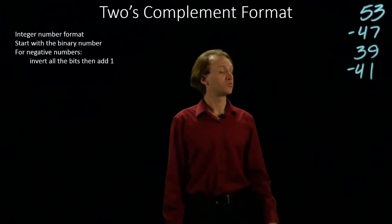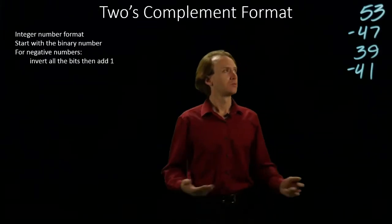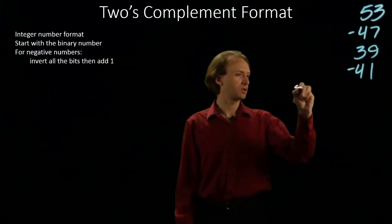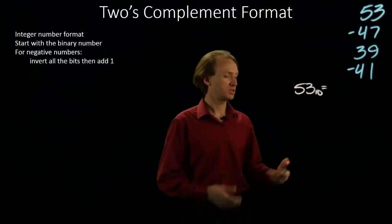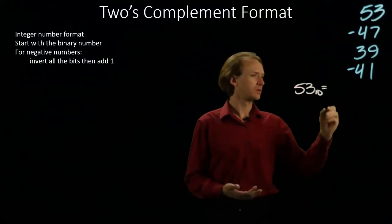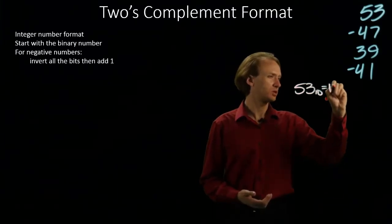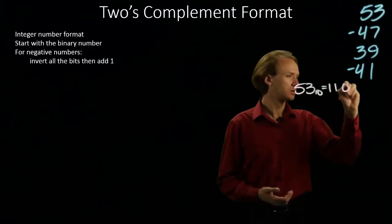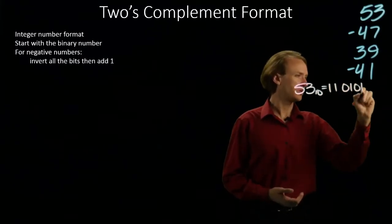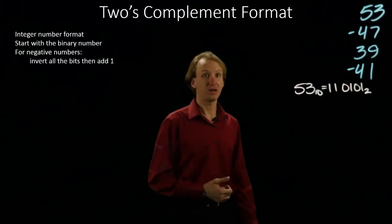This time I'm going to convert these four numbers into the two's complement format. My first number is 53, so I will begin by converting this number into binary. I have 32 plus 16 gives me 48, plus 5 gives me 53. So there is 53 in binary.